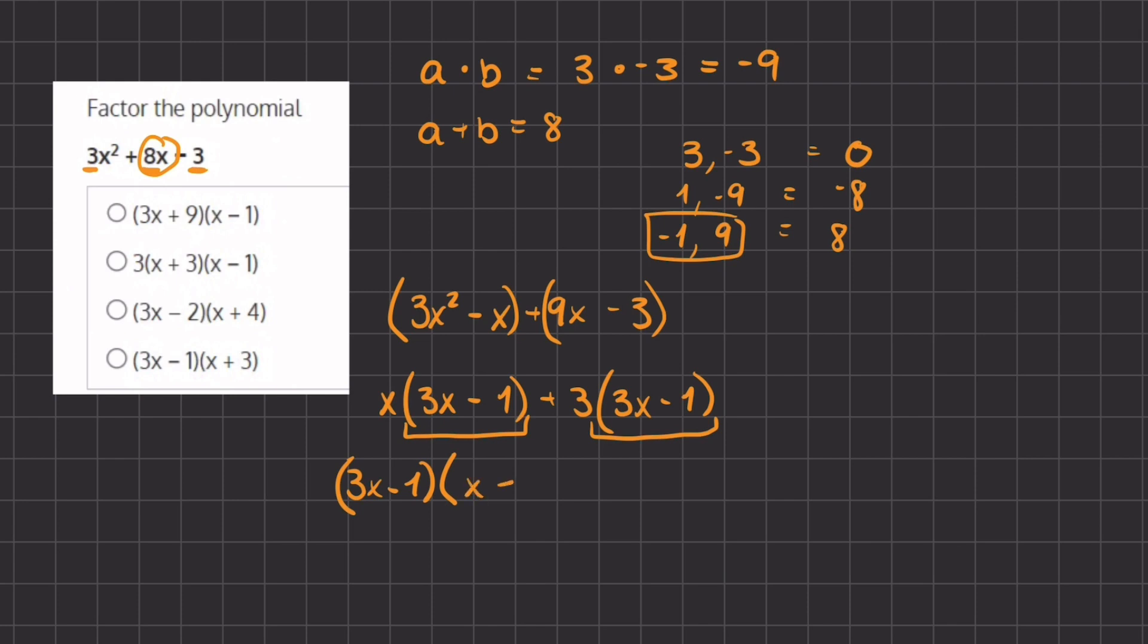Now this is how we factor. This will be the factored version of the polynomial: (3x - 1)(x + 3). And if you take a look at your answers, option D represents this answer the best.